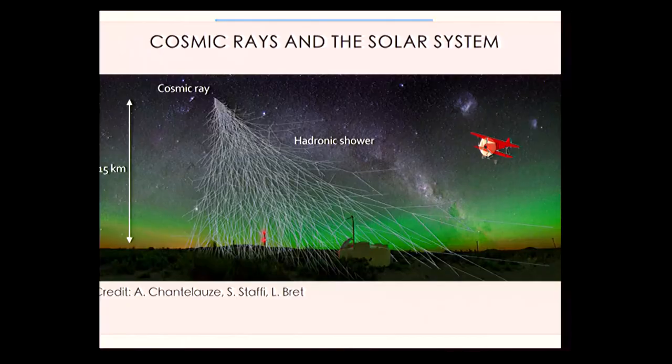The cosmic ray itself hits the upper atmosphere and creates a shower. We sense the decay products hitting the ground — the muons. A plane is shown for scale; the cosmic ray hits well above where commercial jetliners fly. We're just sensing the decay products, not 200 MeV particles directly — though there is some extra radiation at altitude.